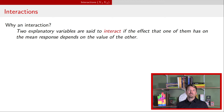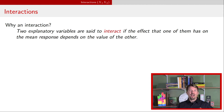Two explanatory variables are said to interact if the effect of one of the explanatory variables depends on the level of the other explanatory variable. In that situation, we need a multiple regression model that's a little bit more sophisticated than the models we've seen so far within this playlist.